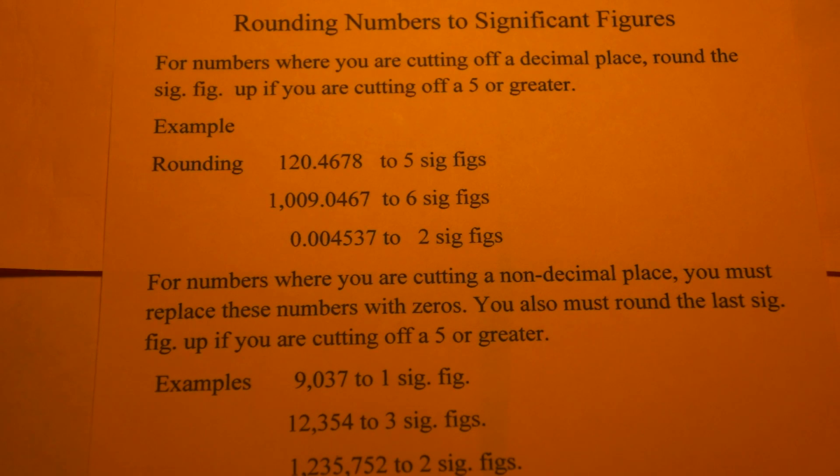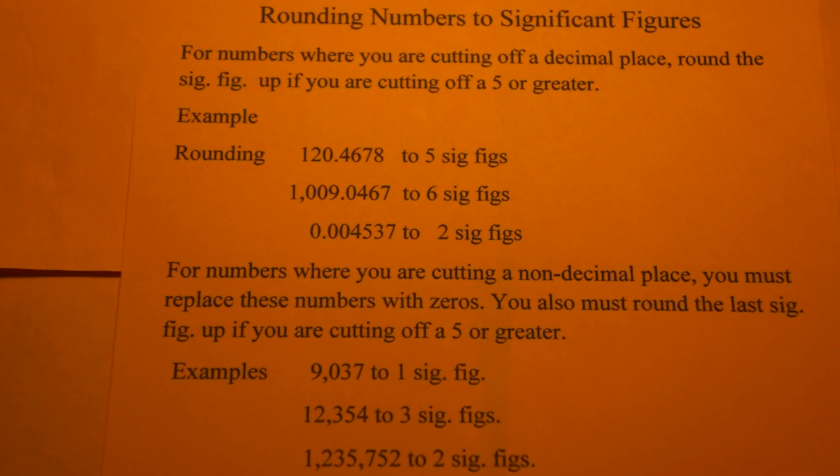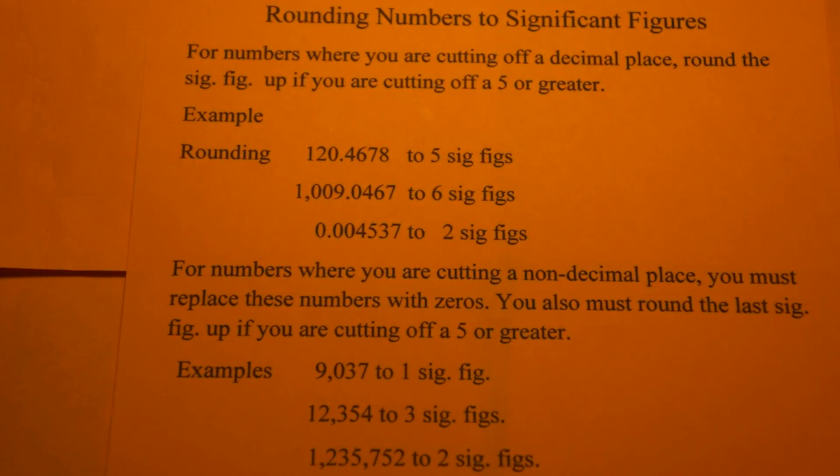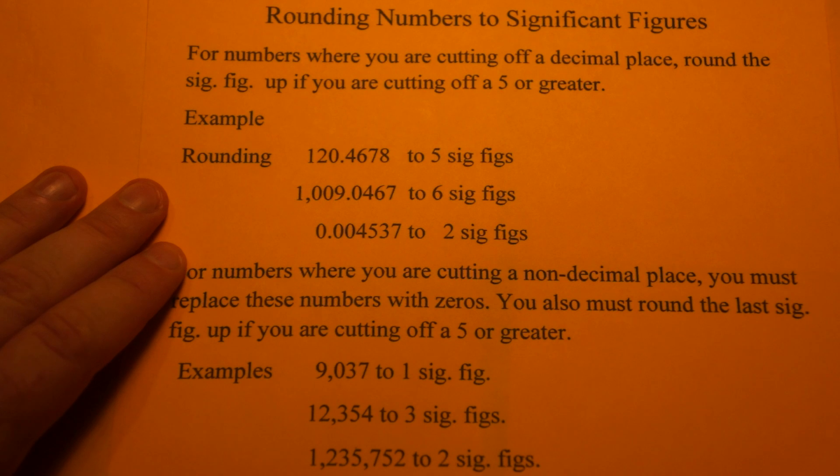This video is going to show you how to round a number to a certain number of sig figs. So let's say you determine an answer from an experiment and you determine the number of sig figs you need to round to, well this is going to show you how to adjust your number. One of the more complicated things in chemistry, a lot of students have trouble with this.